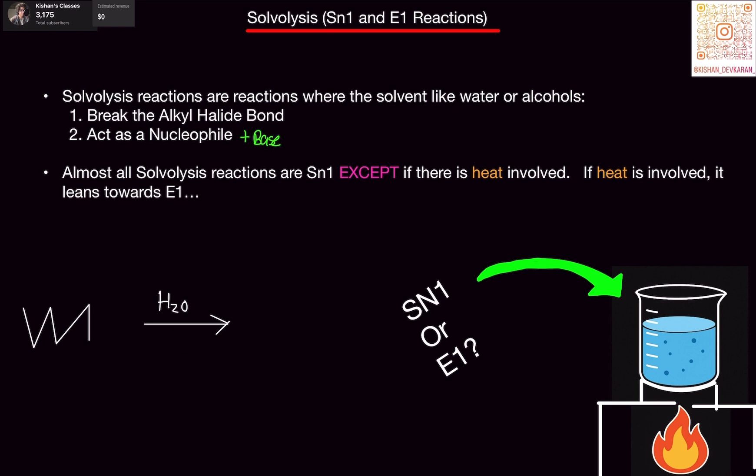The triangle means heat. It could also spell out heat too, right? So it could actually say heat. Then it would be E1. So this video is going to help you identify when to do SN1 and when to do E1, because that is the biggest problem students have. They do not know when to decipher, because the solvents are the same.